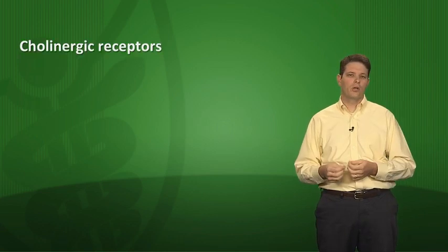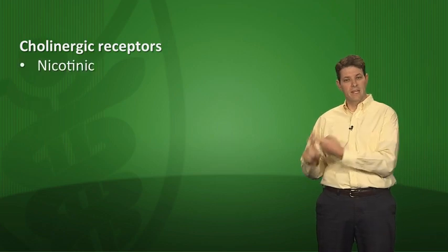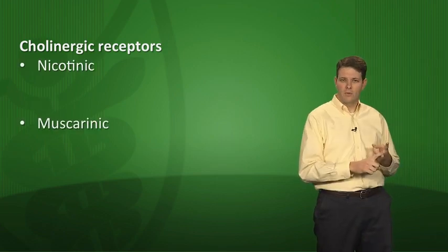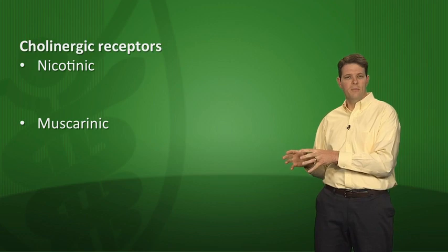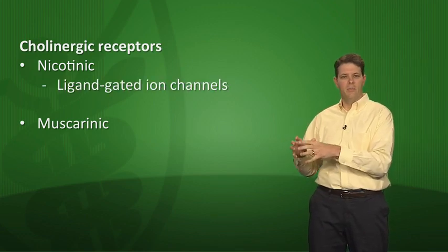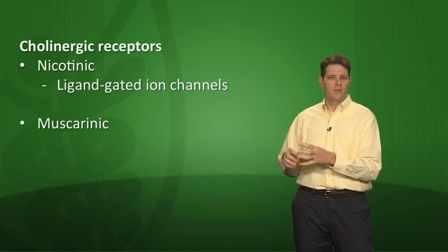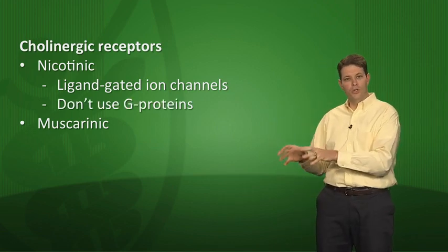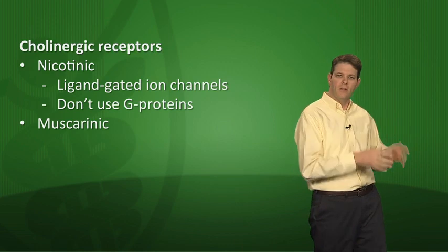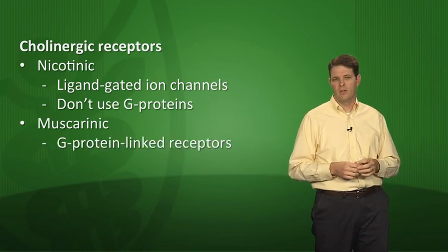Let's start by reviewing different classes of receptors and their downstream effects, beginning with cholinergic receptors. There are two different types: nicotinic receptors and muscarinic receptors. Nicotinic receptors are ligand-gated ion channels — nicotine binds and the channel opens, letting cations like sodium and potassium through. Nicotinic receptors don't use G proteins, but muscarinic acetylcholine receptors are G protein-linked receptors.